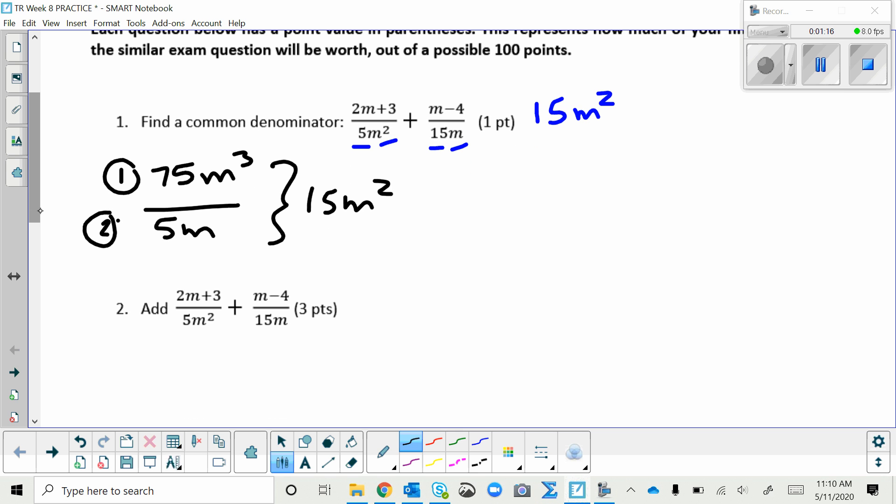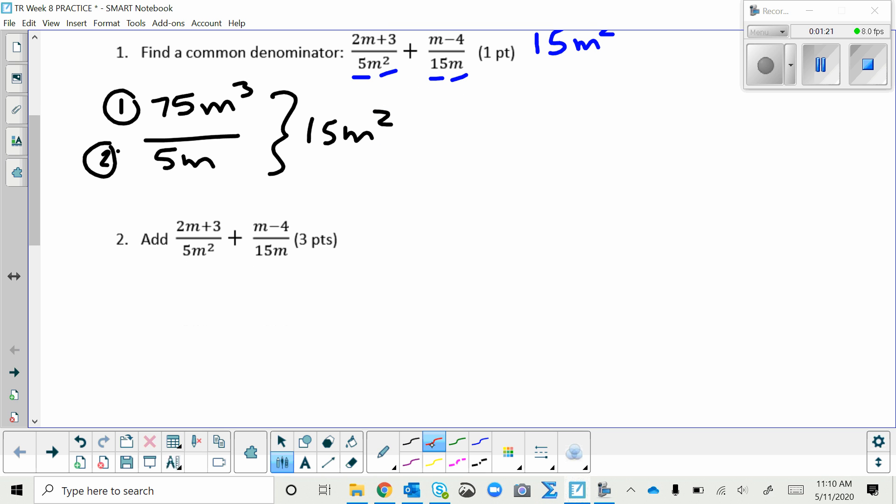And then for number two, we use that common denominator to add these two fractions. We first have to rewrite each of them so that their denominator is 15m squared. So for this first fraction, what do you have to multiply 5m squared by to get 15m squared? And the answer is 3 over 3. And for the second fraction, what do you need to multiply the bottom by to get 15m squared? And the answer is m. And you need to do that to the top and bottom.